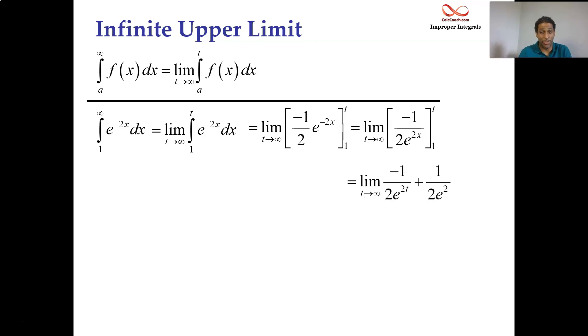So we're talking about 2t, that's infinitely large. e raised to an infinitely large number is exponentially large. We have a negative 1 divided by twice an exponentially large number. What happens there, as the number gets larger and larger, it's going to go to zero. And then we just have the other part.